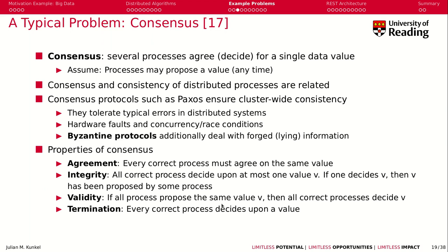If all processes propose the same value V, then the correct processes must decide that V is the correct value. So if everyone tells you 'I'm 35,' everyone must have and assume that is the correct information. And lastly, it must terminate — every process must decide on a value and can't just reply 'unknown.'